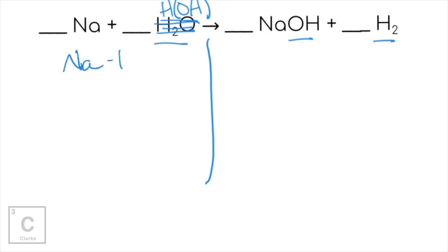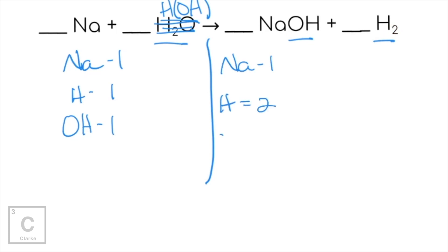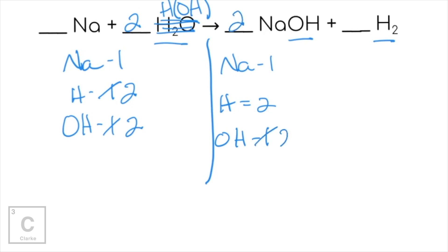Let's start writing this down. I've got one sodium, one hydrogen, and one hydroxide. Going to the other side — keep it in the same order — sodium: one; hydrogen: two; hydroxide: one. So our hydrogens don't balance. If we put a two here, now I've got two hydrogens, but that affected my OHs, so I'm going to put a two there. Now I messed up my OH, so let's go fix it on the other side — put a two here, that gives me two hydroxides.